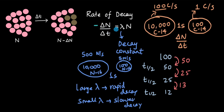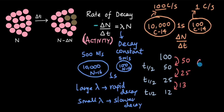This gives us the important equation: the rate of decay equals lambda times N. The rate of decay is sometimes called the activity of the sample. One common unit for activity is the curie, denoted by capital C small i, which equals 3.7 × 10^10 decays per second.